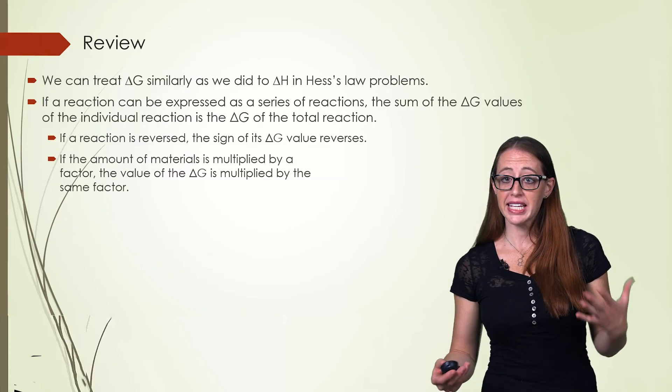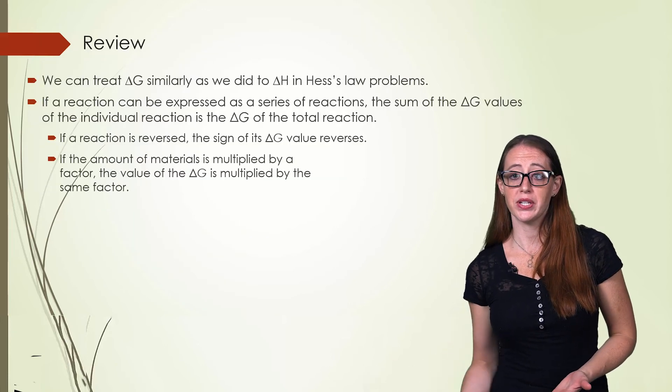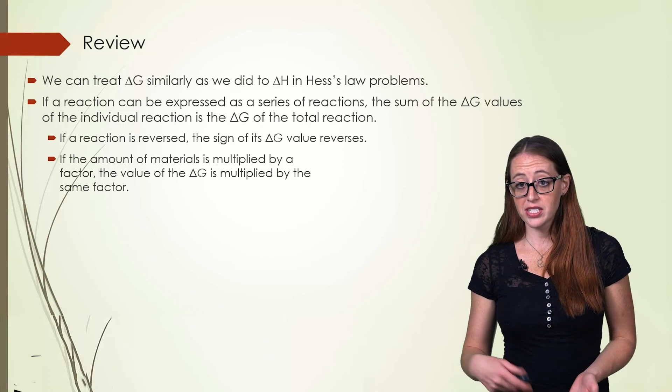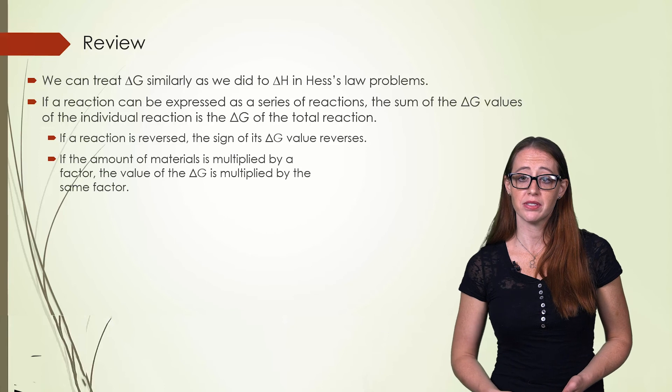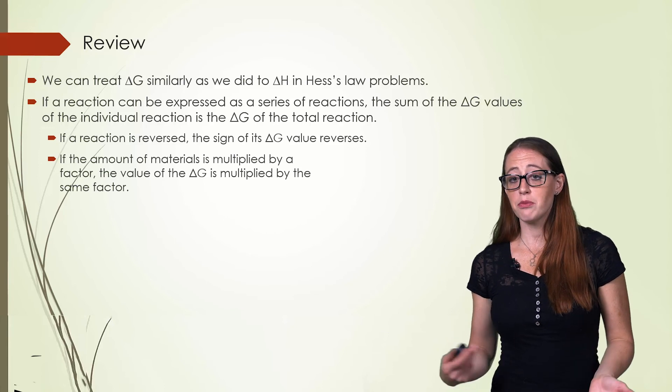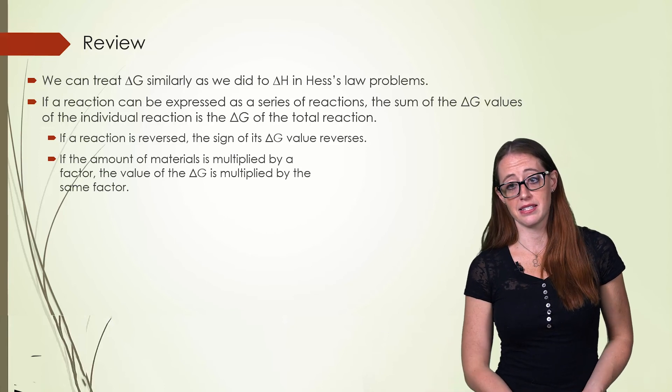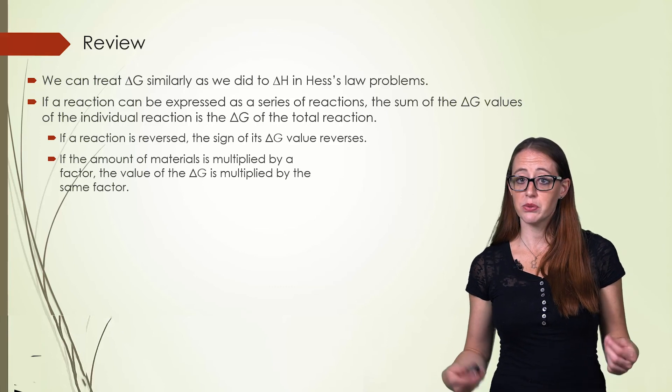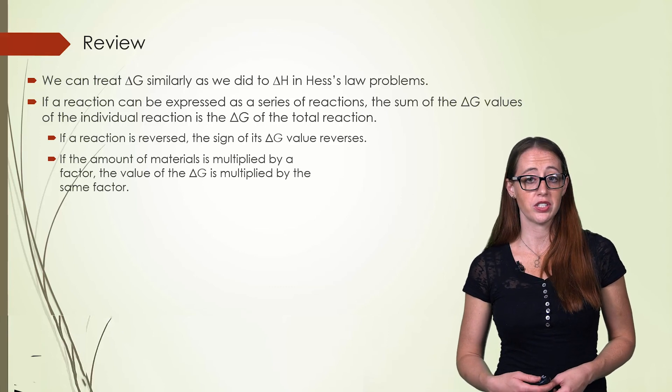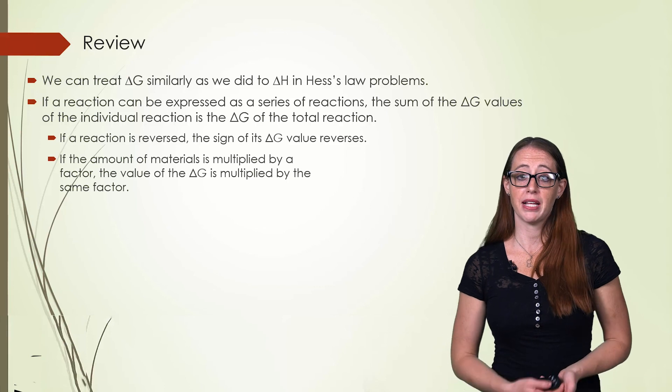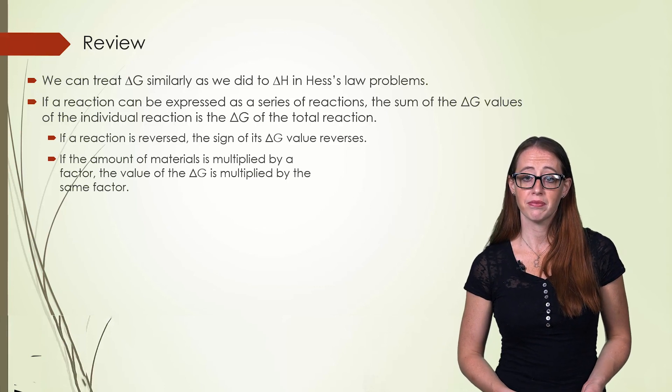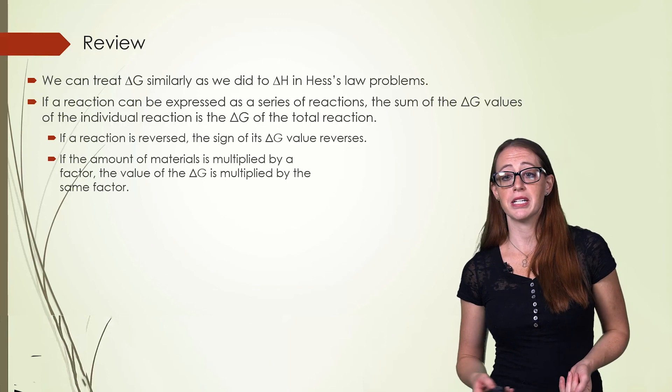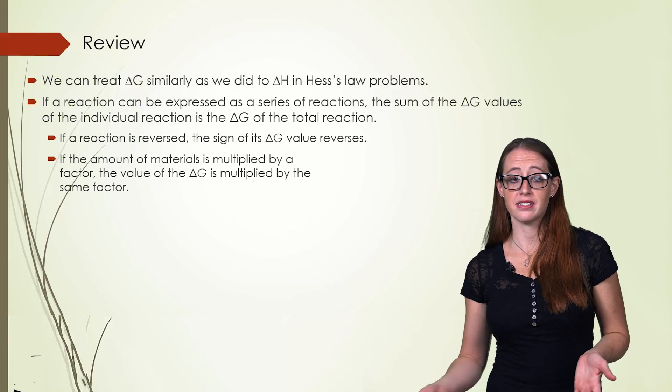In review, we can sum the reactions to add to another reaction. Just like when we added enthalpy in the Hess's Law problems, we can add up the Gibbs free energy values. In the same way that we manipulated equations in Hess's Law, we can do it for Gibbs free energy. If we need to reverse the reaction, the delta G changes sign. If we need to multiply the reaction, then we multiply the Gibbs free energy by that same number. These rules exist because the change in Gibbs free energy is an extensive state function.